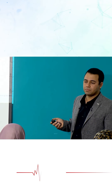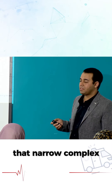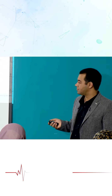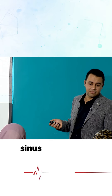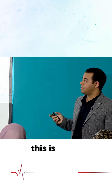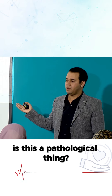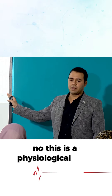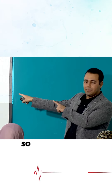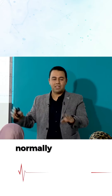So what's this rhythm? Narrow complex irregular tachycardia with P waves — sinus arrhythmia. Is this a pathological thing? No, this is a physiological thing. This is not a patient; this is a relative of a patient who wanted to have an ECG. So this is a normal physiological phenomenon.